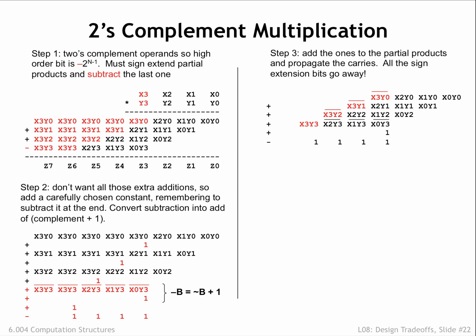If that partial product is non-negative, x3y0 is a 0, so all the sign extension bits are 0 and can be removed. The effect of adding 1 in that position is to simply complement x3y0.